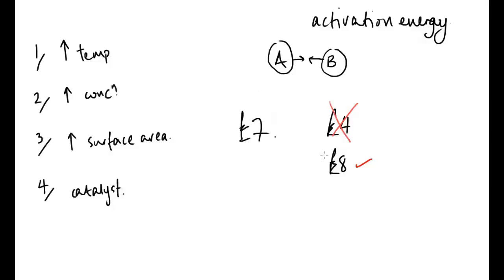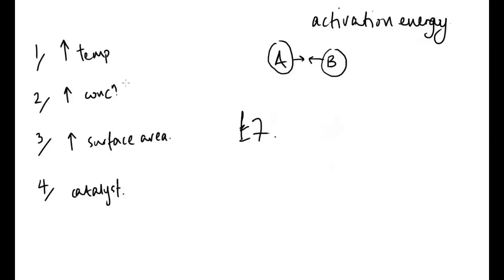How does this apply to concentration? Imagine there's only one person who comes in with six pounds — they can't get in. Now imagine a hundred people, each with varying amounts of money. It's likely that a few of those people would have the required seven pounds. We haven't given them more money or changed the price — all we've done is brought more people in. They go to the desk and may or may not have the right amount, but because there are more of them, statistically we will get more people into the cinema.